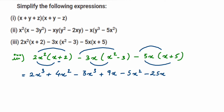Now collect like terms. For x³: 2x³ − 3x³ = −x³. For x²: 4x² − 5x² = −x². For the x terms: −9x − 25x — since 25 is greater, we get −16x. Wait, combining gives minus 16x. So the final answer is −x³ − x² − 16x. That's it — we've solved all three problems, I hope it's clear.